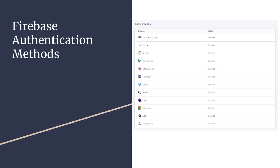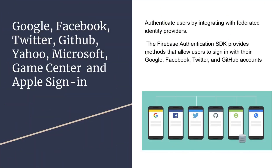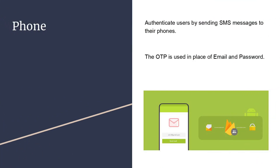Firebase supports many authentication methods — for example, email and password, phone number verification using OTP, Google sign-in, Play Games sign-in, Facebook, Twitter, GitHub, Yahoo, Microsoft, and many more. For email and password, Firebase authenticates users with their email address and password. The Firebase Authentication SDK provides methods to create and manage users that sign in with their email ID and password. Firebase also handles sending password reset emails in case of a forgotten or lost password.